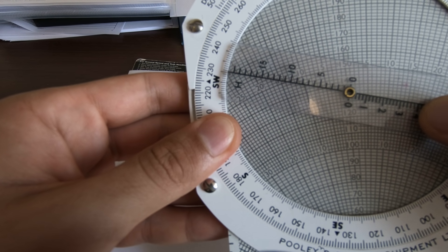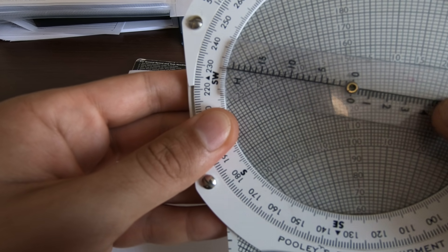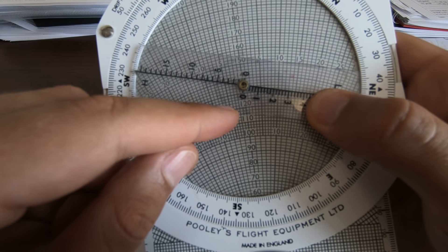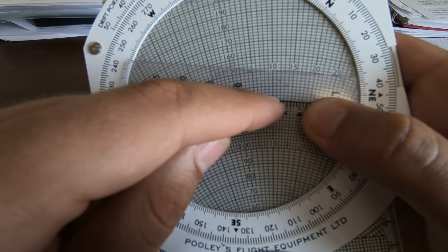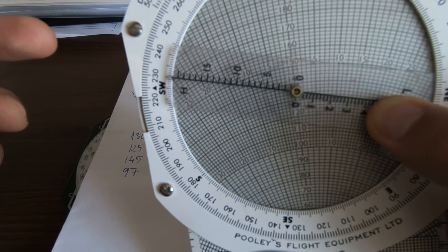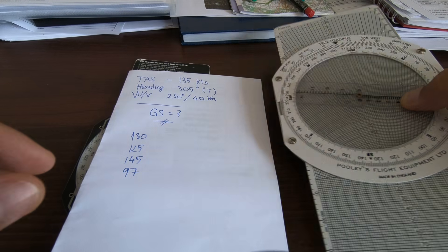So as you can see, we are here straight on the ground speed 120, 130, straight on the 130. So the correct answer is 130.